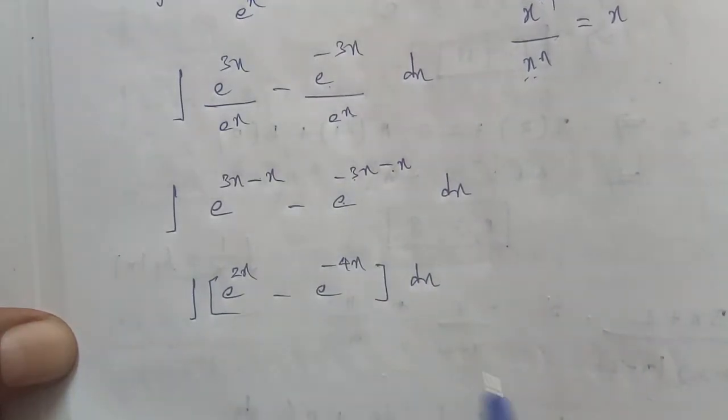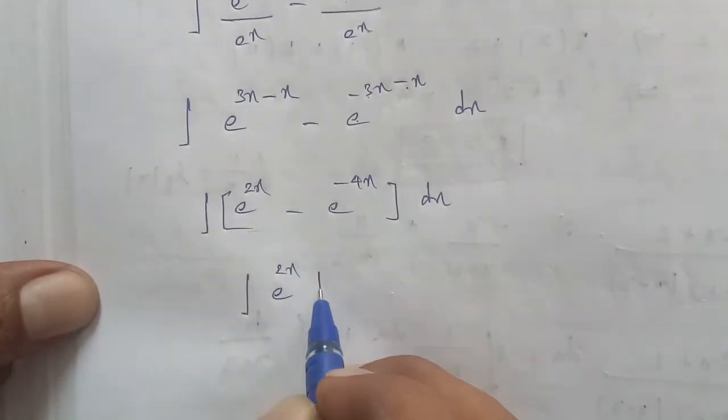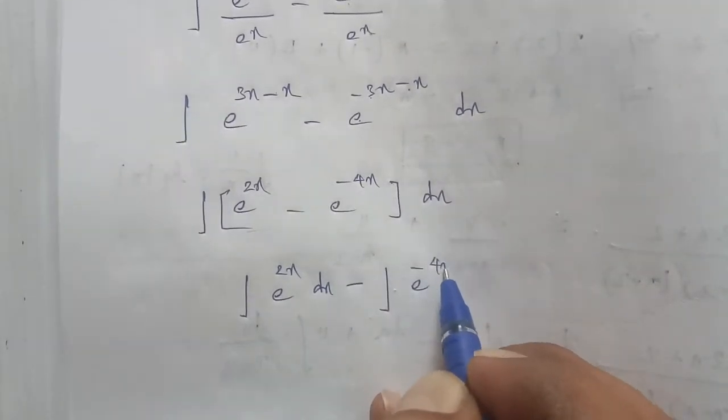Next in the problem, we split this into: integral of e^(2x) dx minus integral of e^(-4x) dx.